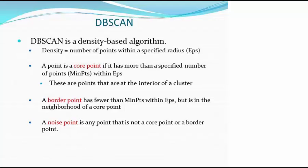Then you have a border point. Those points — you're not sure if they are core or not core. They have fewer than the minimum points in the circle, but they have a neighbor that is a core point. Inside the circle there is one core point, so they are basically close to the core points — that's the border point or marginal point. A noise point is neither a border point nor a core point; it does not have enough points and does not have a core point nearby.